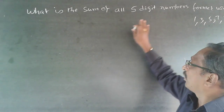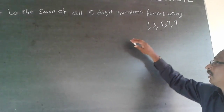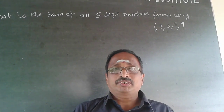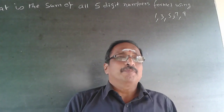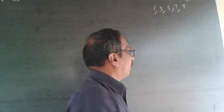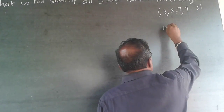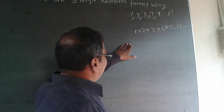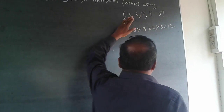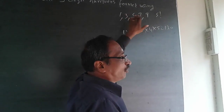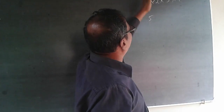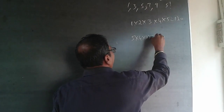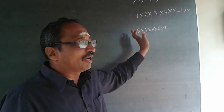First, find out how many such numbers can be formed. 1, 3, 5, 7, 9 are five different numbers — five different elements. The number of combinations for any five different numbers is five factorial. Five factorial is 1 × 2 × 3 × 4 × 5 = 120 numbers. In the first place you can choose one among five, then four remaining, then three, then two — that's how you get five factorial, so 120 numbers can be formed.